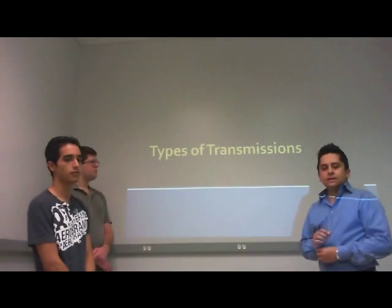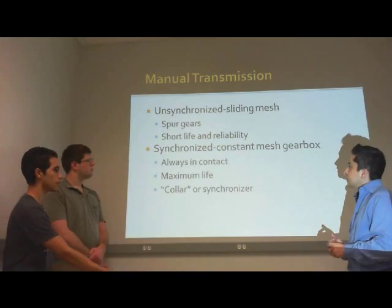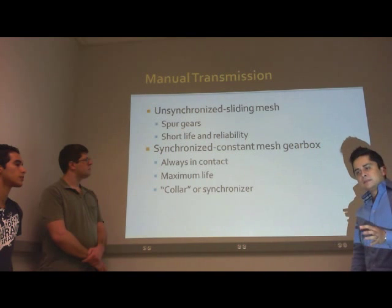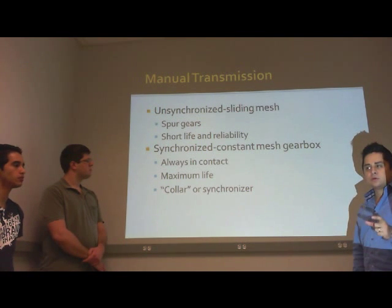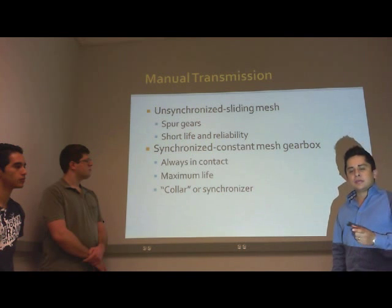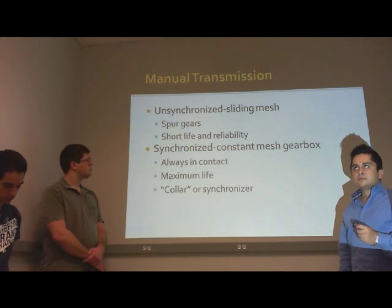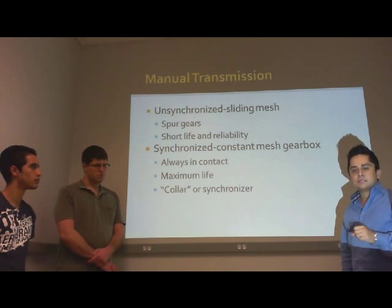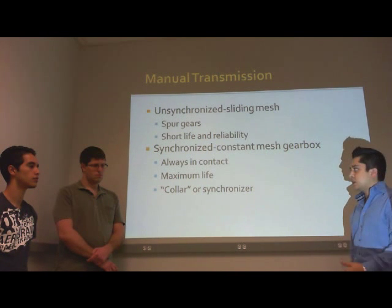Types of transmissions. In this presentation we will see the different types of transmissions that automobiles currently have. First, we start with the manual transmission — the unsynchronized sliding mesh transmission. Basically, it doesn't have any synchronization in between. The driver has to control the revolutions per minute of the engine in order to switch gears. They are built on spur gears, so there is a lot of noise, and it is less reliable since the driver must be conscious of both the road and the engine revolutions.